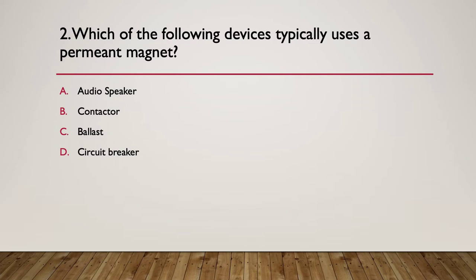Which of the following devices typically uses a permanent magnet? A, an audio speaker. B, a contactor. C, a ballast, that's a choke or coil that's used in fluorescent lighting. Or D, a circuit breaker. Pause here. Here's your hint. Think about how each device works and eliminate the ones if you don't already know exactly which one it is.